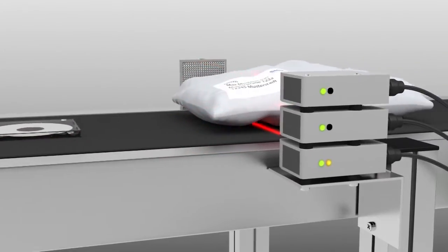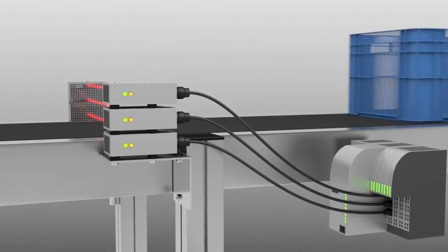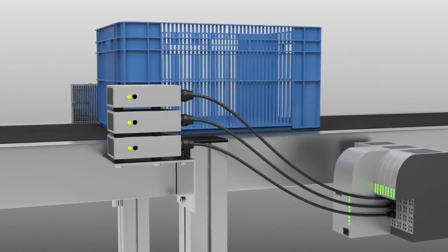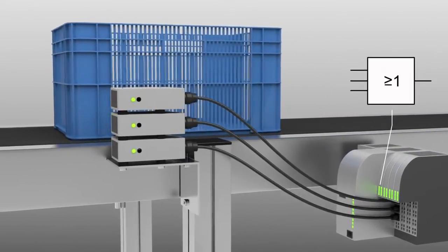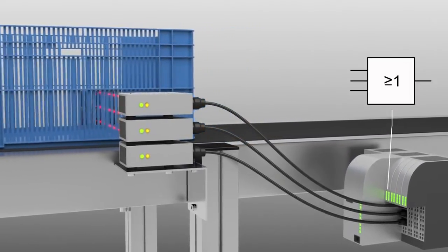Additionally, each sensor has to be wired to a PLC individually and a programmer must combine the signals using a logic block. Finally, any objects with holes in them cause the outputs to false trip unless extra steps are taken.